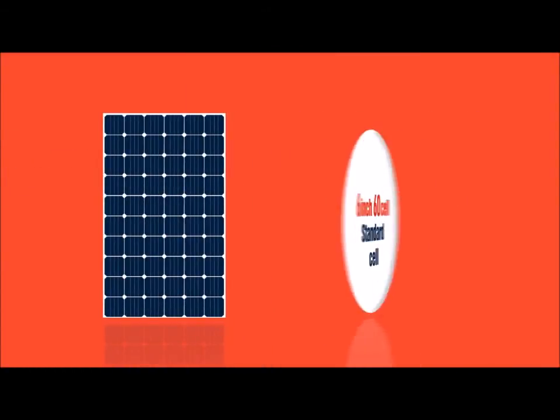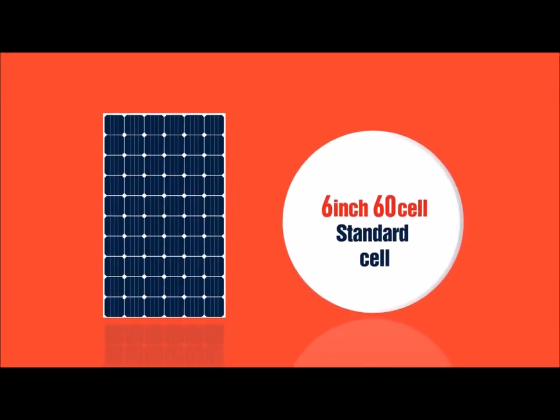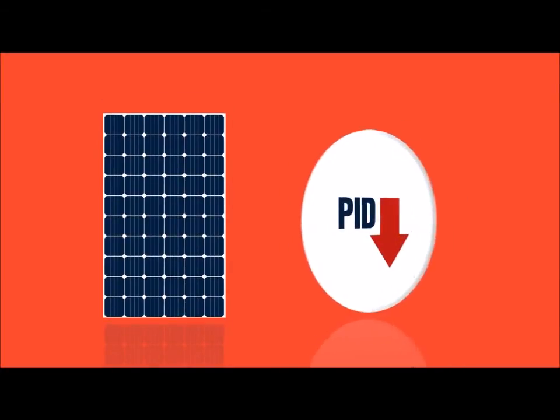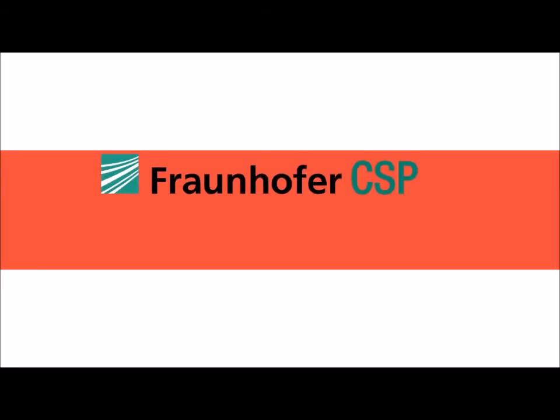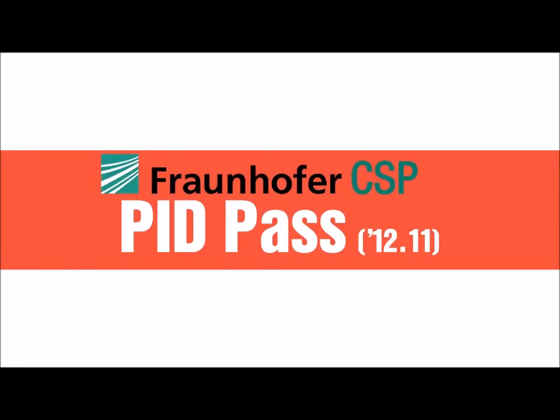Neon has a better PID compatibility because it has kept its standard cell structure, high-efficient module, compared to high-efficient modules using irregular cell structure. Neon passed the PID test conducted by Fraunhofer CSP, proving its PID reliability.